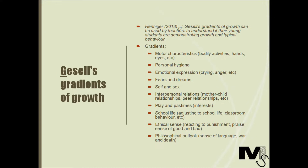These ten gradients include: motor characteristics like bodily activities, hands, eyes and the growth of all of these parts; personal hygiene; emotional expression like crying, anger etc; fears and dreams; self and sex; interpersonal relations like the mother-child relationship and peer relationships; play and pastimes; school life including adjusting to school life and classroom behaviour; ethical sense like reacting to punishment, praise or having a basic sense of good and bad; and philosophical outlook, meaning a sense of language and concepts like war and death. Teachers can observe a child's typical growth and development in these areas and guide children if growth is lacking in any of these.